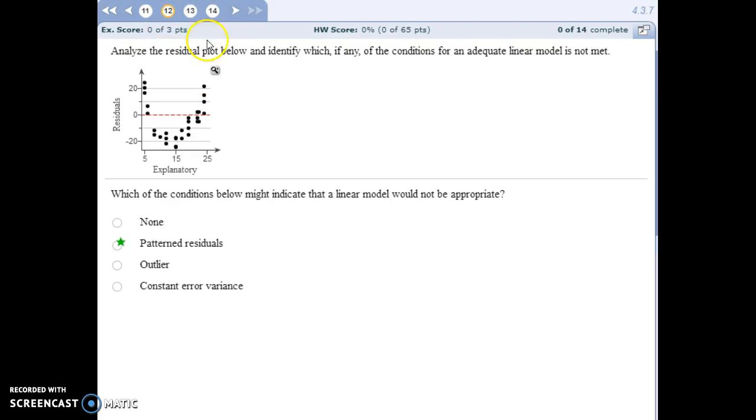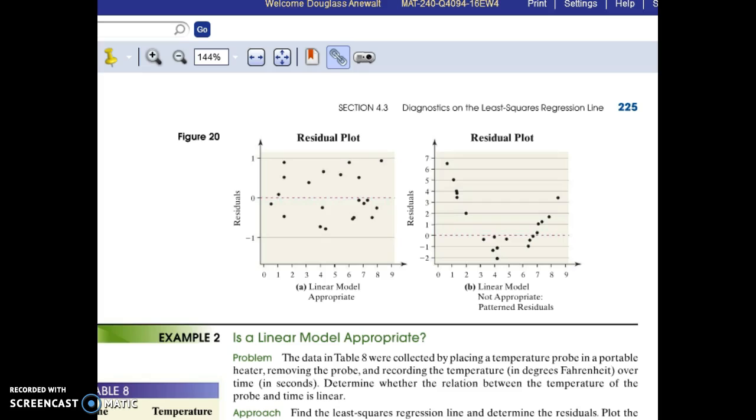Number 12, to truly determine if a linear model is appropriate, you need to look at the plot of the residuals. And if you look at page 224 in the textbook, it starts to talk about things to look for. This graph is actually on page 225. One thing to check for is a patterned residual to see if there's a pattern. And so here's an example, like a U-shaped pattern.